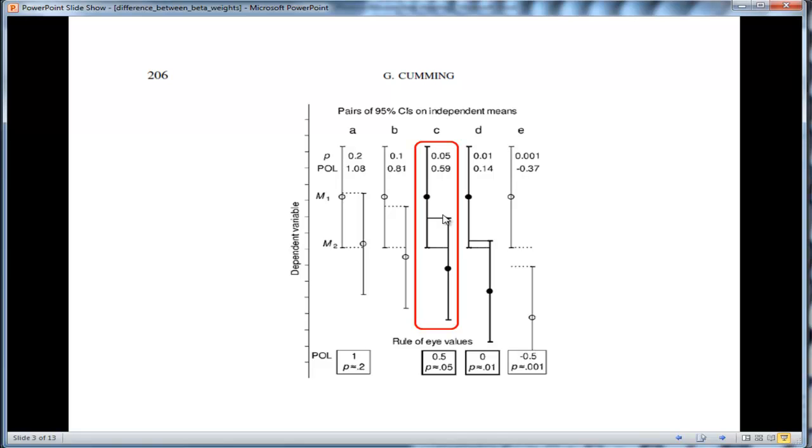Well, in this particular example, Cumming showed that even though there's 59% overlap in the confidence intervals, there's still a statistically significant effect equal to about 0.05.